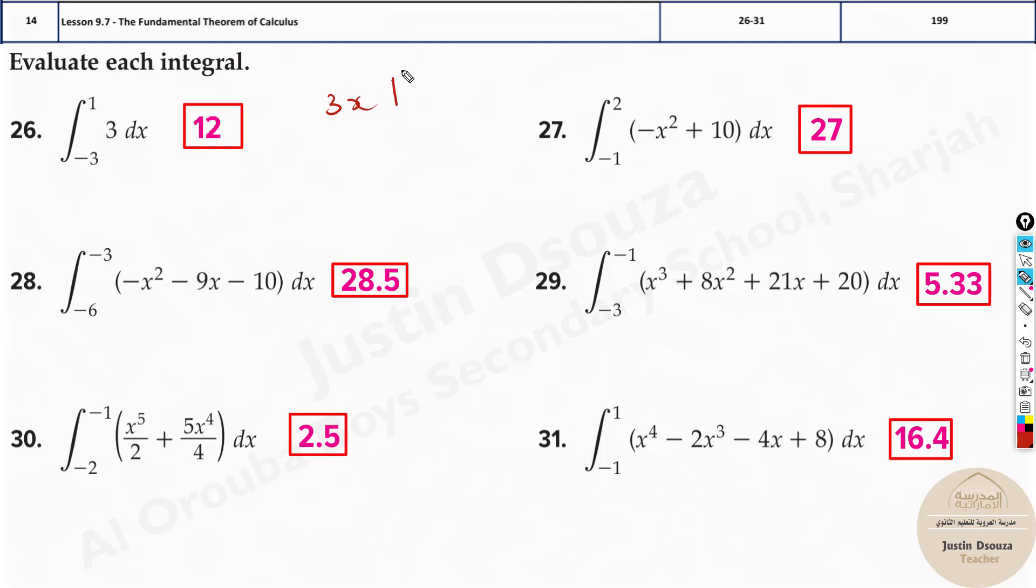When you integrate it, it's going to be 3x, right? Now you apply the limit 1 and minus 3. Upper limit is always a bigger number, lower limit is a smaller number. Now when you apply the limits, it's upper limit minus the lower limit.